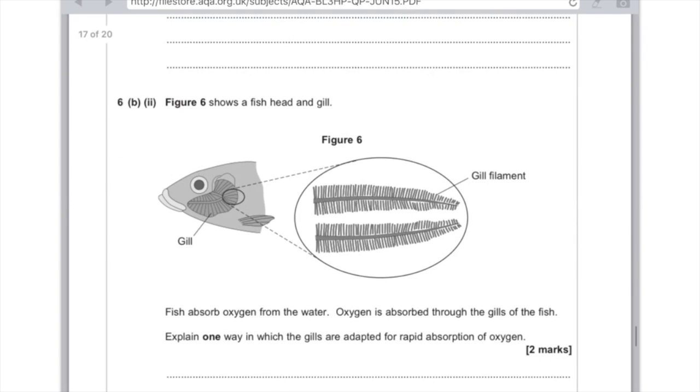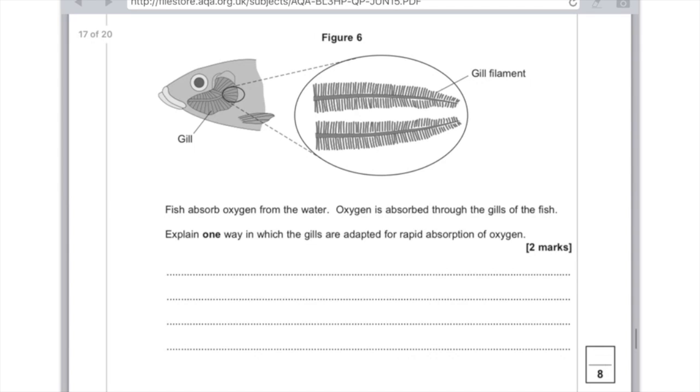Figure 6 shows the fish head and gill. Fish absorb oxygen from the water. Oxygen is absorbed through the gills of the fish. Explain one way in which the gills are adapted for rapid absorption of oxygen and that is worth two marks. You can start by saying that they have many gill filaments and you need to mention the word filament to get the mark here. And what that does is it creates a large surface area. However, there are lots of different options. You could say that the gills are very thin to provide a very short diffusion pathway, or you could say that there's a very good blood supply to maintain the concentration gradient. Or you could even say that the water continually flows over the gills. Again, maintaining the concentration gradient. But for me, the most straightforward answer here is that they're thin to allow short diffusion.